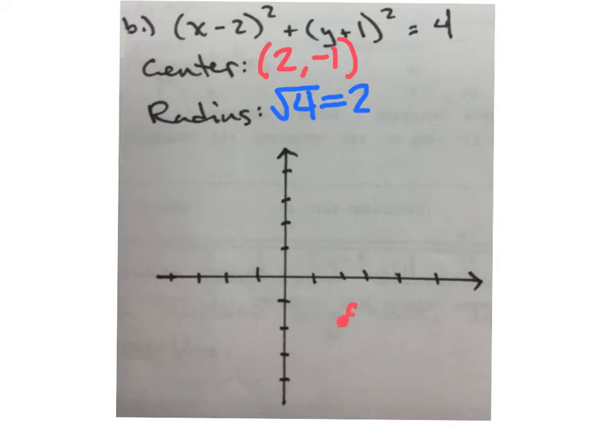Then go 2 units in all 4 directions. So go up 2, to the left 2, down 2, and to the right 2.